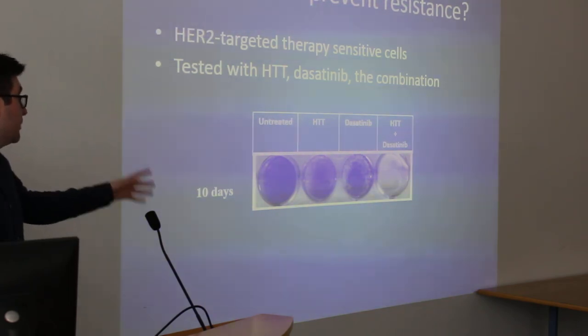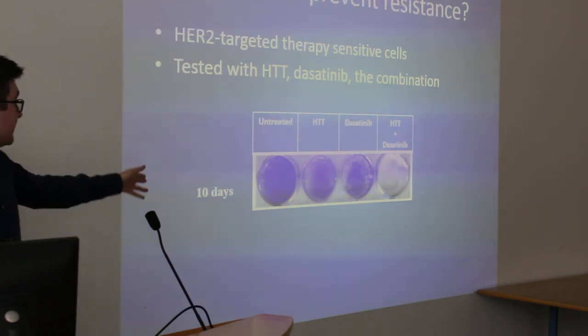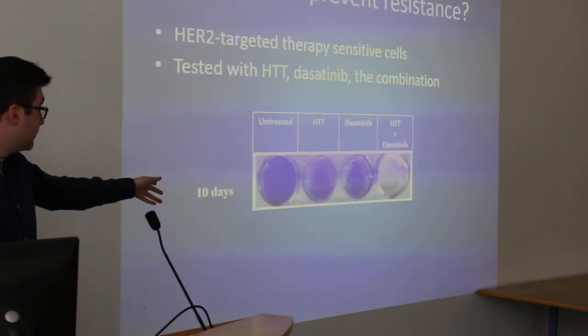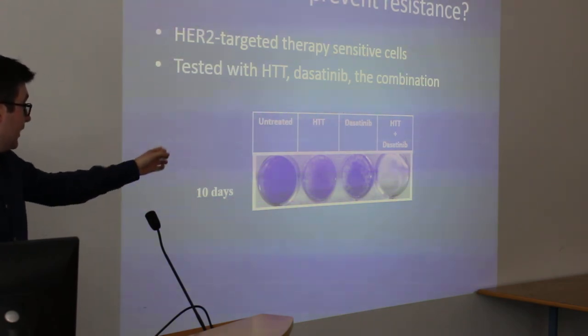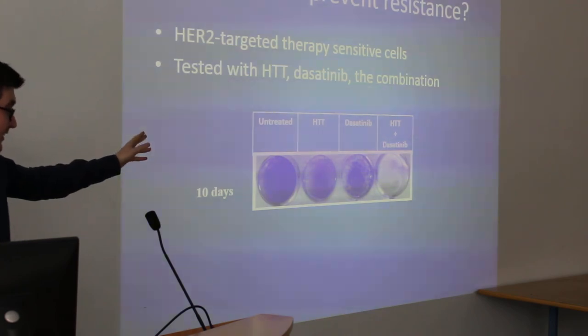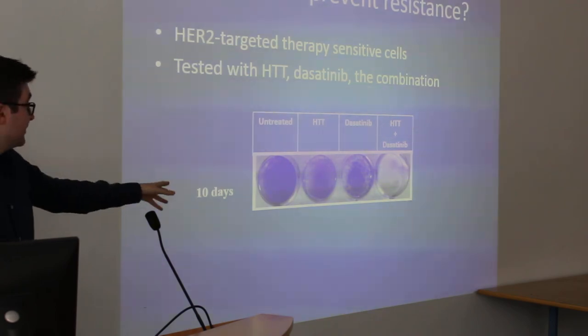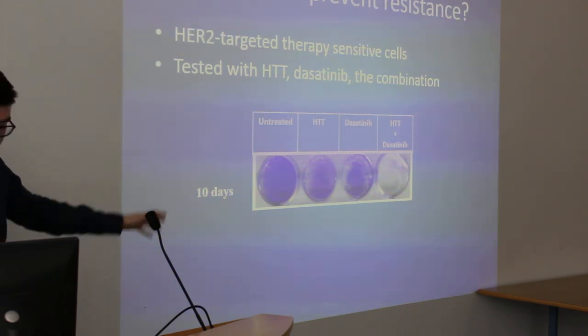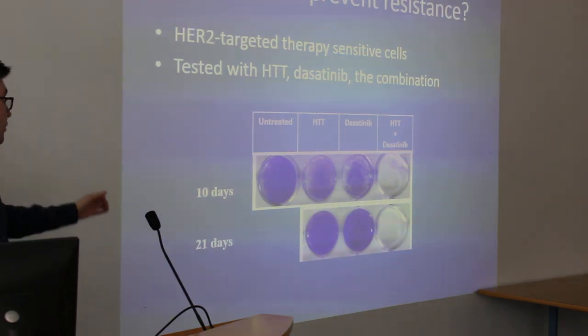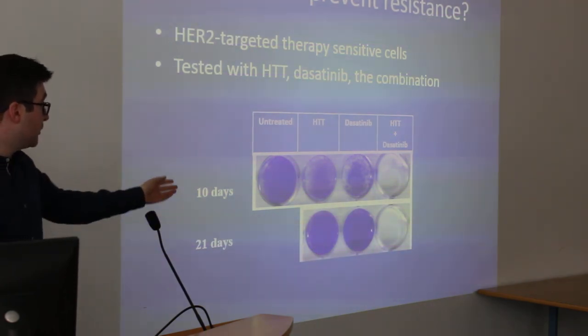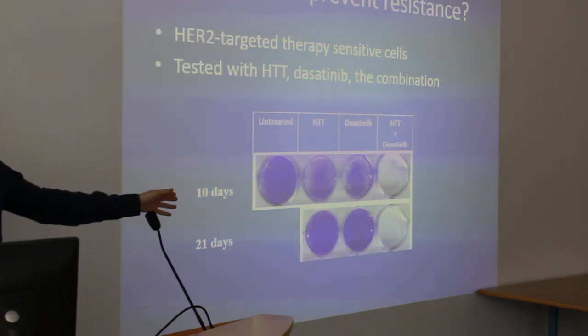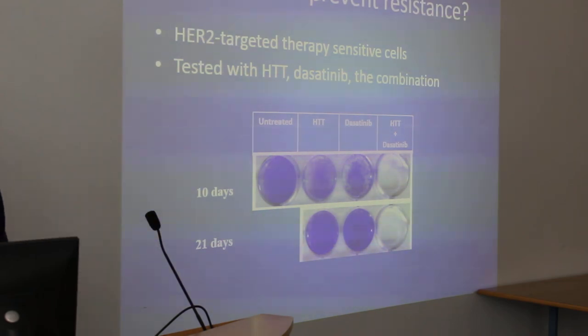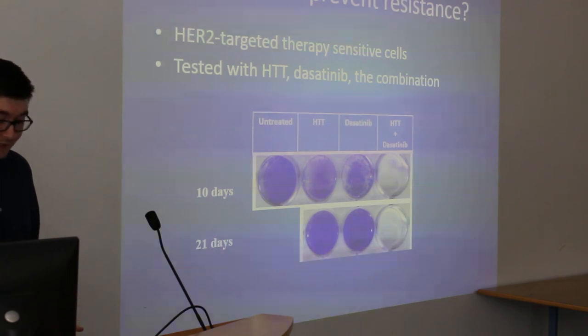So the darker the blue, the more cells. You can see cells that don't get any treatment continue to grow. There's about a 50% growth decrease when you treat with HER2 targeted therapy and the dasatinib alone. We see a massive effect when you combine the two. But importantly, resistance does emerge with both of these agents, but it doesn't when you combine the two together. So this would be a candidate combination that could be used in the clinic.